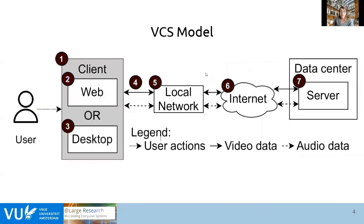Before we show the results of our research, we will define a video conferencing system. A video conferencing system usually consists of two components: the client side and the server side. These two components are connected over a network. The user interacts on the client side through their device, and accordingly accesses the web browser or an application.